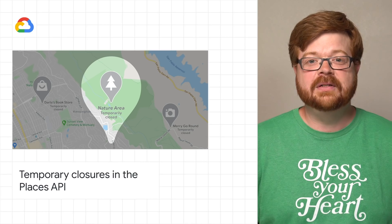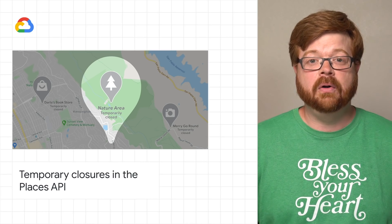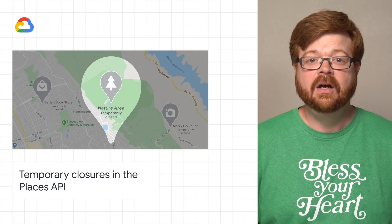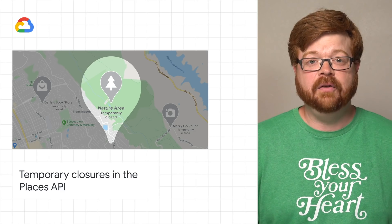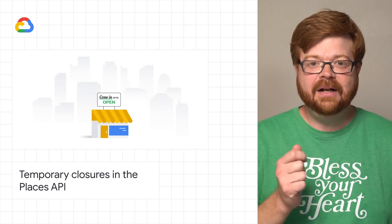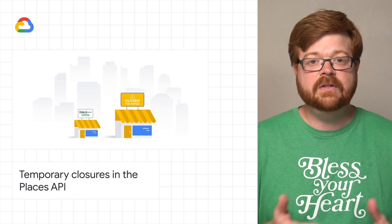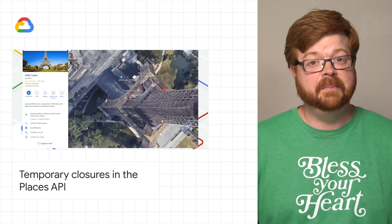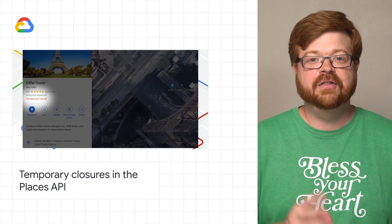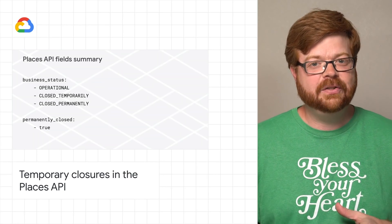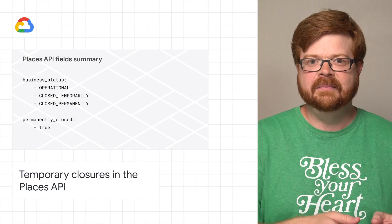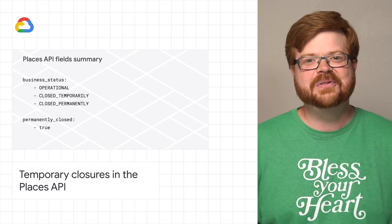To provide the most accurate representation of the real world through Google Maps platform-powered experiences, we're now making temporary closure information available through the Places API. You can now access the operational status of a business via a new field named business_status. This field can have three possible values: operational, closed temporarily, and closed permanently. Check out the post to find out more.